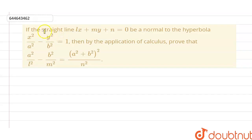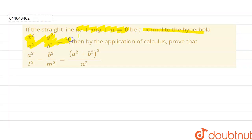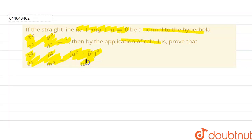The given question is: if the straight line Lx plus My plus N equals to 0 is a normal to the hyperbola x squared by a squared minus y squared by b squared equals to 1, then by the application of calculus, I have to prove that a squared by L squared minus b squared by M squared equals to a squared plus b squared, whole squared, divided by N squared.